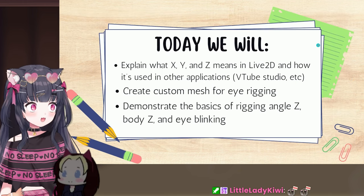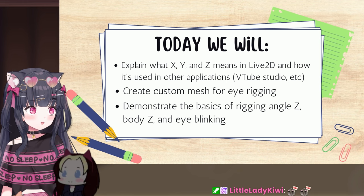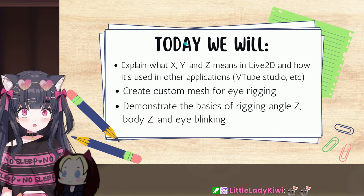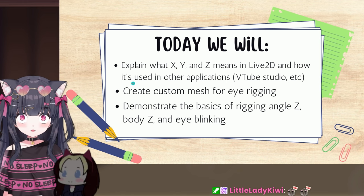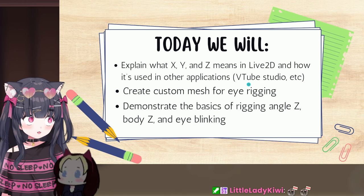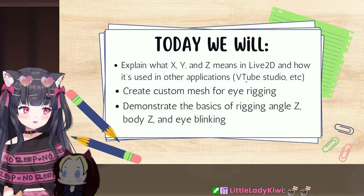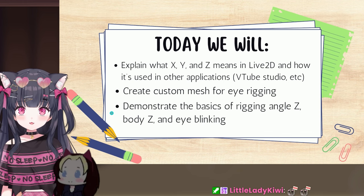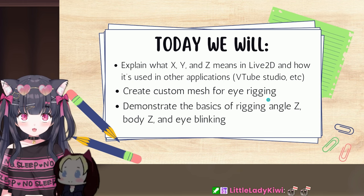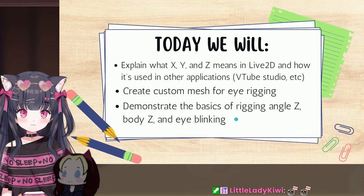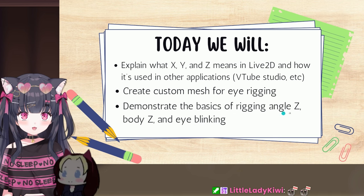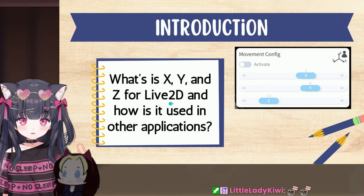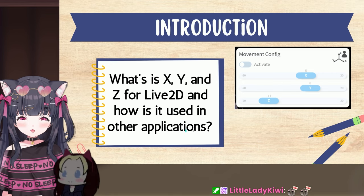Today we are going to learn what X, Y, and Z mean in Live 2D and how they're used in other applications like VTube Studio. I'm also going to show you how to create custom mesh for eye rigging, and demonstrate the basics of rigging angle Z, body Z, and eye blinking.